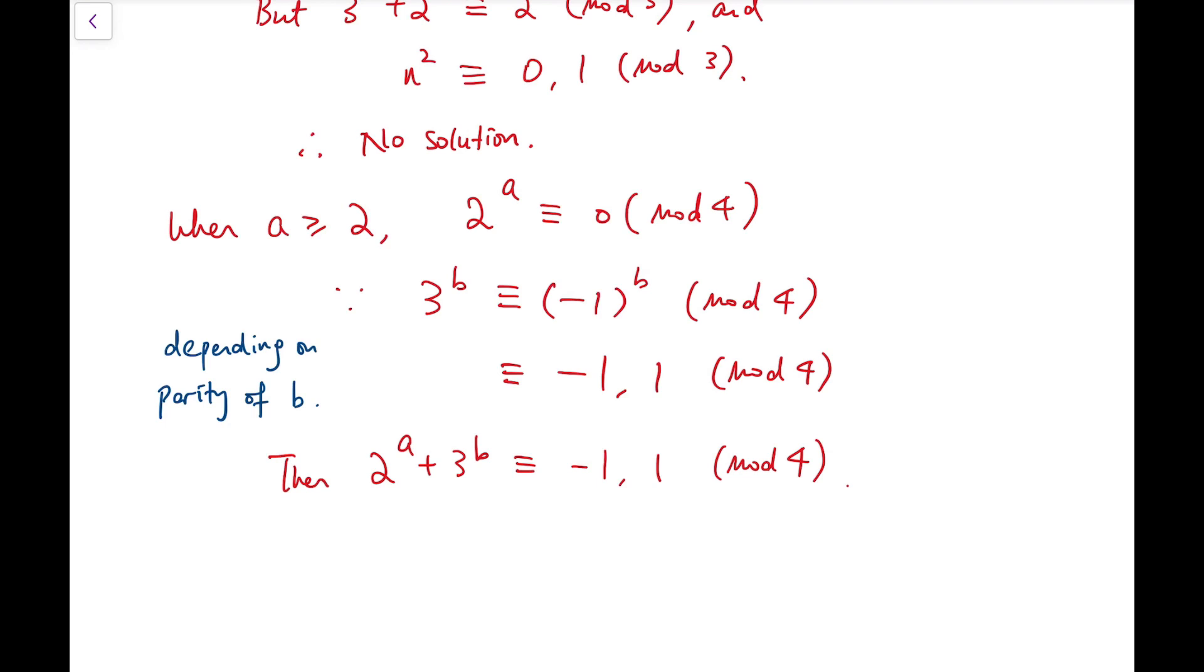And so, noting that a perfect square must be either, again, 0 or 1 mod 4.